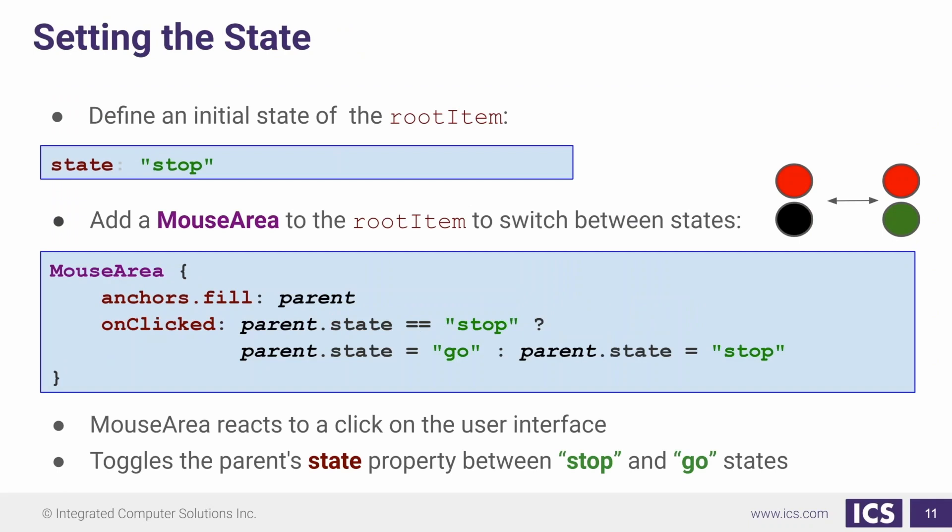As I mentioned earlier, we have a state property that determines what state our item is in. Here in this example, we're going to define our default state for our root item by setting it to be bound to stop. A common mistake here that a lot of people make is instead of setting the state property here, they'll try to set the states property to one of these. This isn't going to work because the states property with the plural with the S at the end is holding your collection of states.